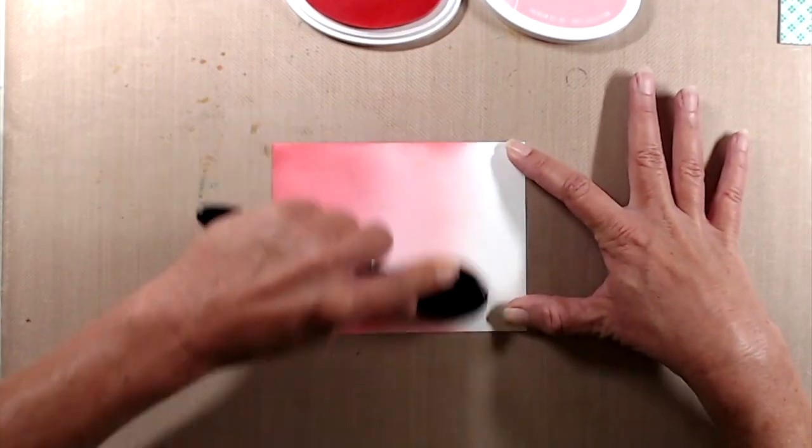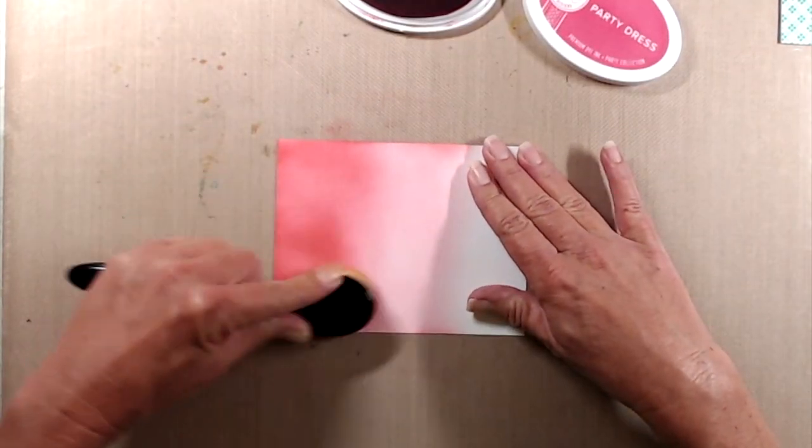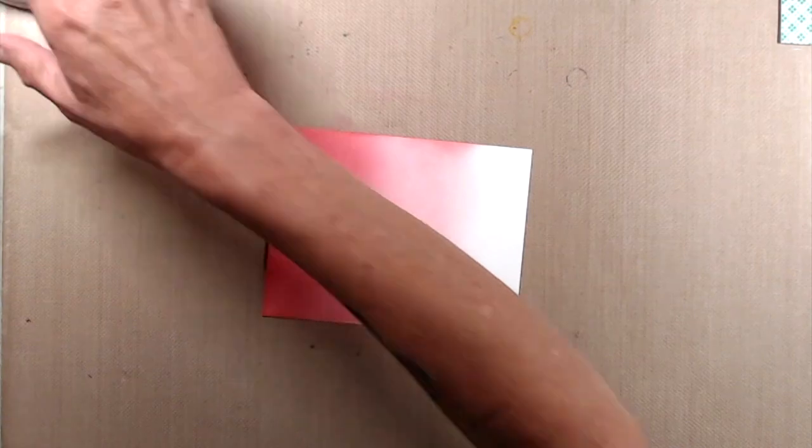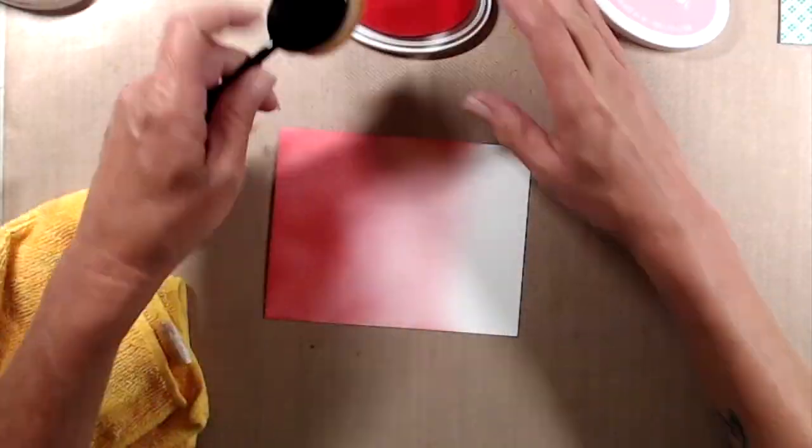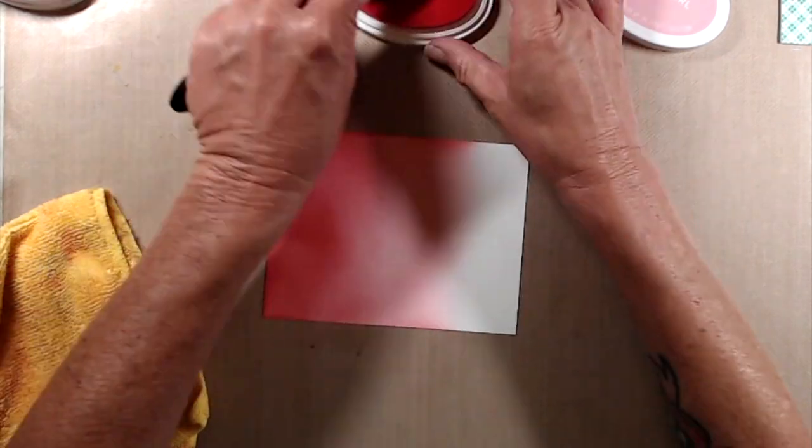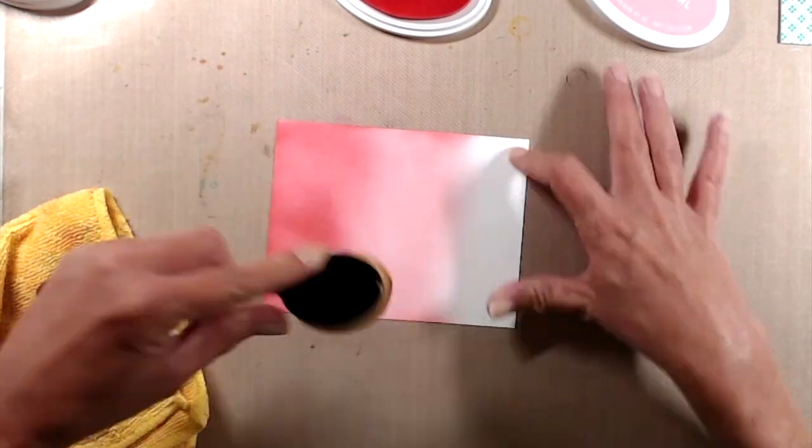I started out with a piece of Neenah Classic Crest cardstock that's cut to four and a quarter by five and a half, and I started to do some ink blending with some Catherine Pooler inks. The darker pink is Party Dress, and the lighter pink is It's a Girl. I used a makeup blending brush that I picked up off of Amazon to do the ink blending.